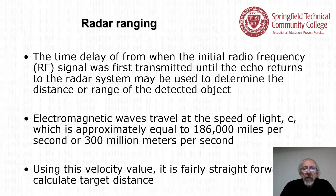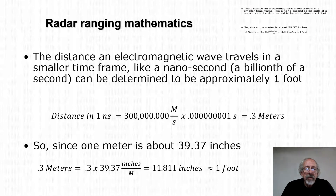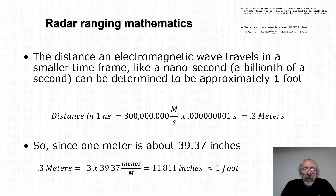Electromagnetic waves travel at the speed of light, C, which is approximately 186,000 miles per second or 300 million meters per second. Using this velocity, it's fairly straightforward to calculate target distance. The distance an electromagnetic wave travels in a nanosecond — a billionth of a second — can be determined to be approximately one foot, or 11.811 inches.